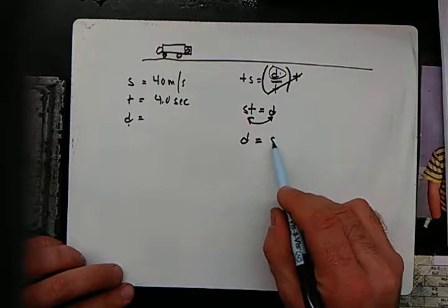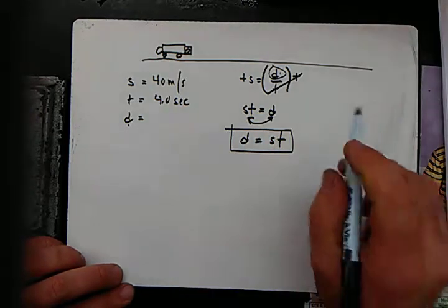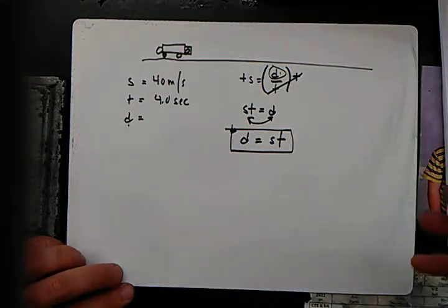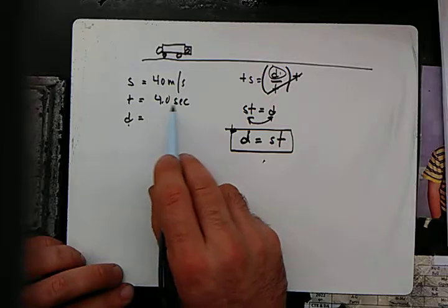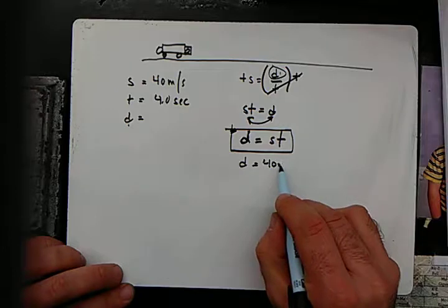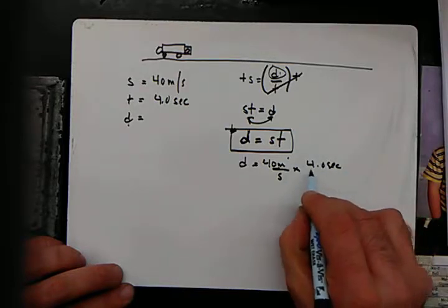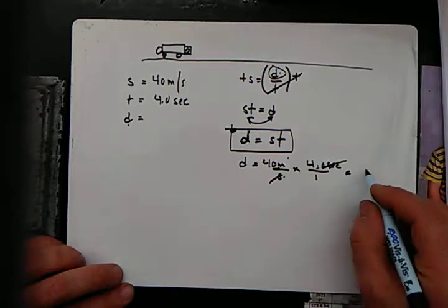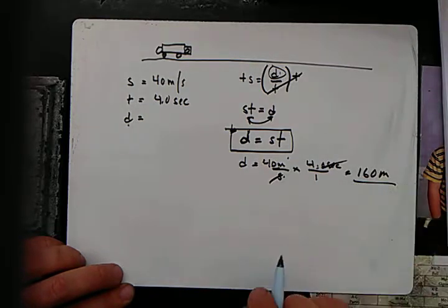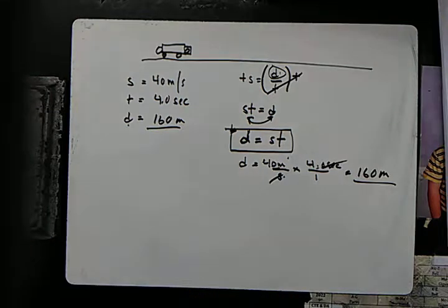Distance equals speed times time. You may want to write this formula on a note card — though no cards are allowed on quizzes and tests, so you'll want to memorize it. Let's figure it out: distance equals 40 meters per second times 4 seconds. The seconds cancel, giving us 40 times 4, which is 160 meters. So the car traveled 160 meters.